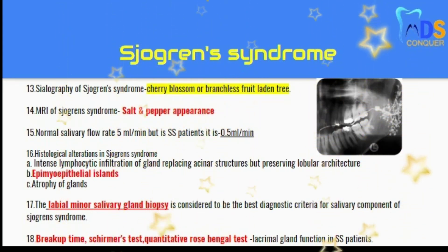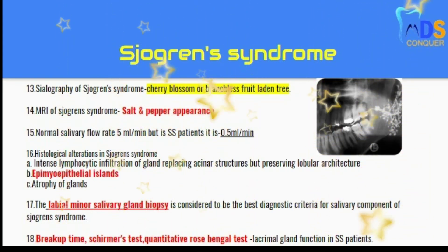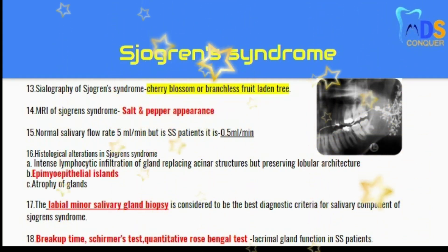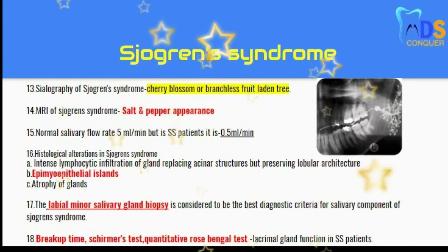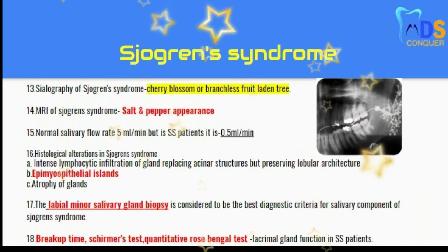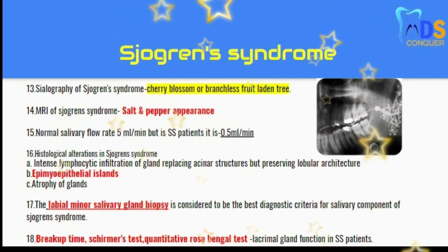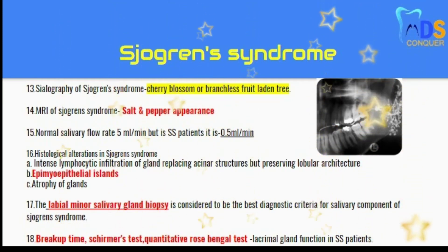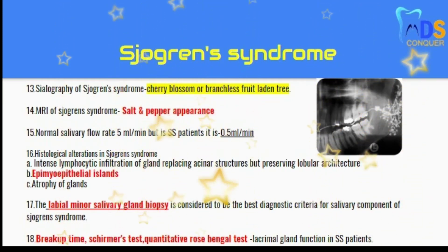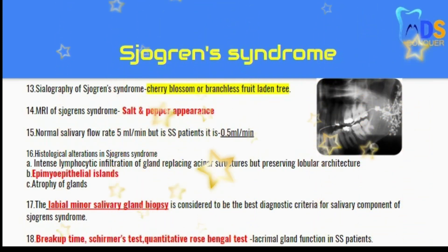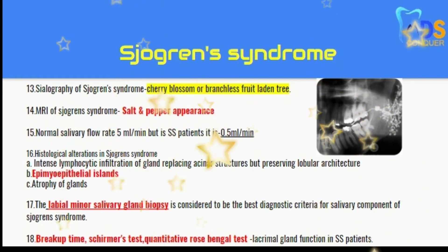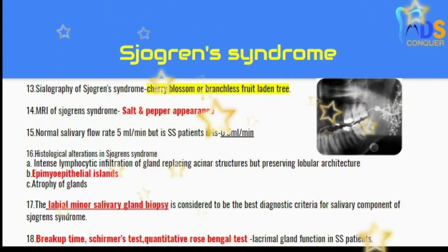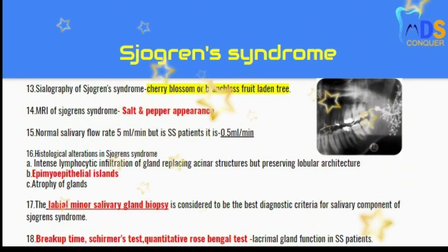Point 15: the normal salivary flow rate in a normal individual is 5 ml per minute, but in Sjögren's syndrome patients it is 0.5 ml per minute. Point 16: histological alterations in Sjögren's syndrome show intense lymphocytic infiltration of the gland, replacing acinar structures but preserving lobular architecture, along with the presence of epimyoepithelial islands and atrophy of glands.